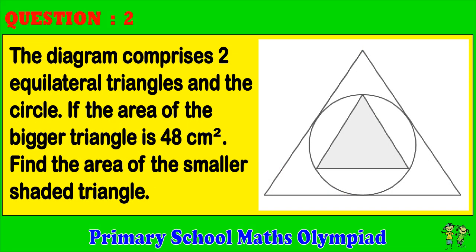Question 2: The diagram comprises two equilateral triangles and a circle. If the area of the bigger triangle is 48 cm squared, find the area of the smaller shaded triangle.